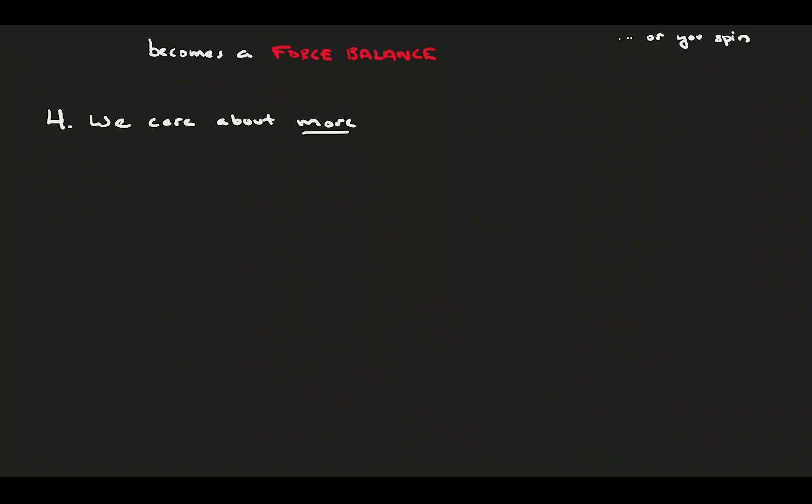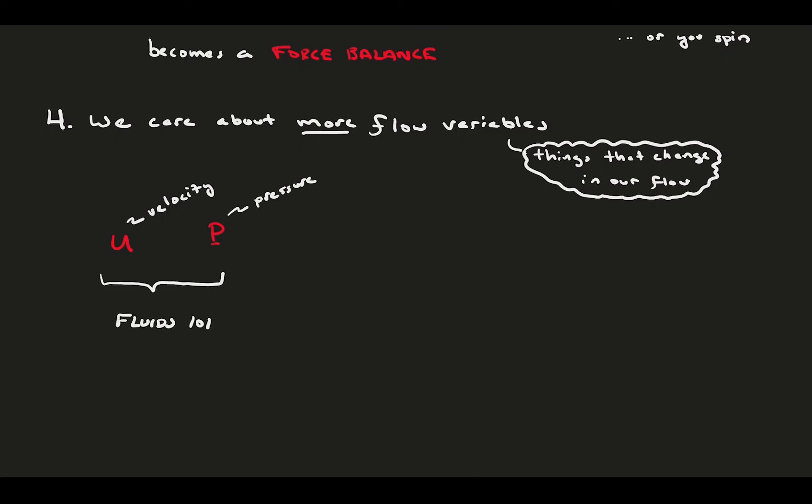And finally, in aerodynamics, we end up needing to solve for more flow variables. The velocity field and the pressure field are the main players in introductory fluid mechanics courses. In order to solve for the velocity and pressure, the two unknowns, you need two equations, which end up being conservation of mass and momentum. For the majority of fluid mechanics, until you explore compressible flow, that's about it.